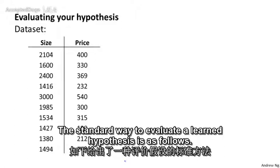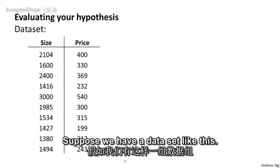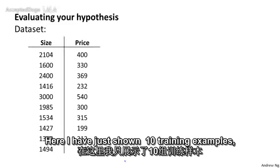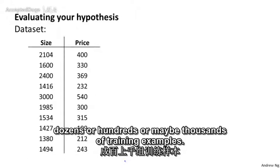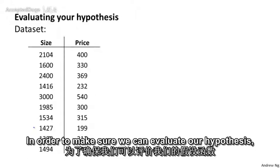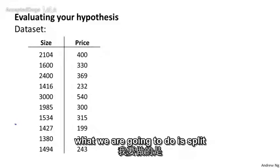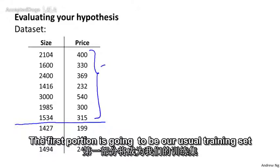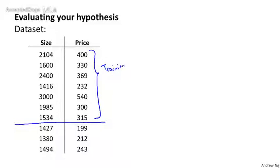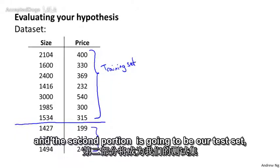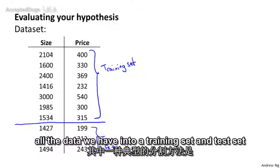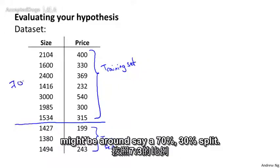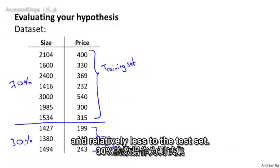The standard way to evaluate a learned hypothesis is as follows. Suppose we have a data set like this. Here I've just shown ten training examples, but of course usually we may have dozens or hundreds or maybe thousands of training examples. In order to make sure we can evaluate our hypothesis, what we're going to do is split the data we have into two portions. The first portion is going to be our usual training set and the second portion is going to be our test set. A pretty typical split might be around a 70%-30% split, with more of the data going to the training set and relatively less to the test set.